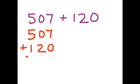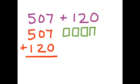And now all we need to do is draw our base ten pictures. So, five hundred seven has five hundreds, but it has no tens, and it has seven ones. One hundred twenty has one hundred, and it has two tens, but it has zero ones. Well, that's easy enough.